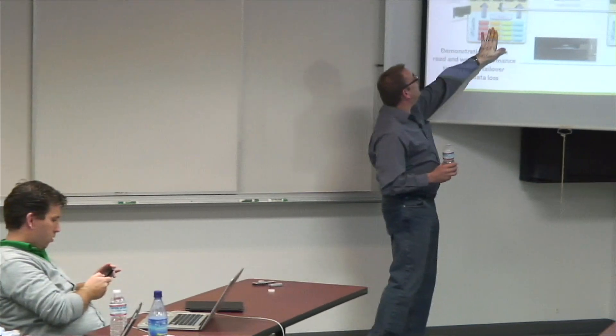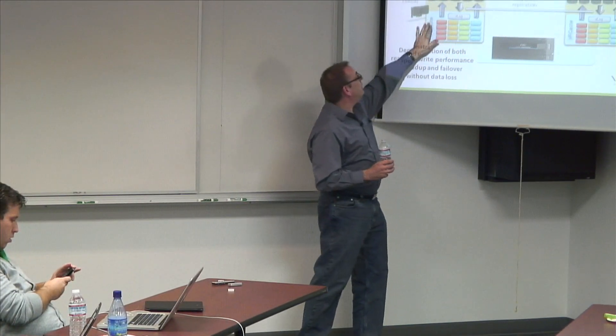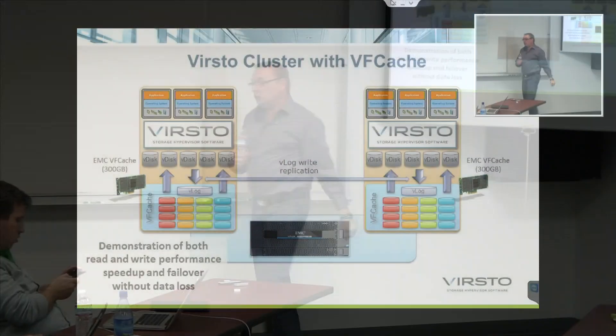We do that because the logs go into VF Cache. When we process the log, that happens at host Flash speeds, taking pressure off the storage area network — rapidly process, send them down, and leverage the existing VF Cache caching software for VSpace. So this is read cached by VF Cache, write cached by Verstowe.